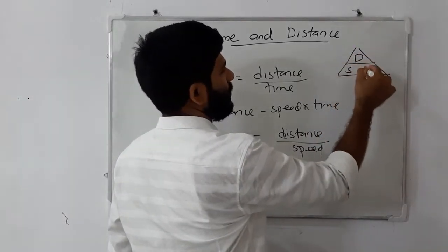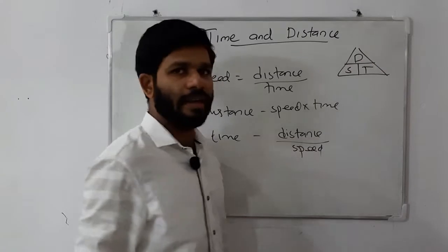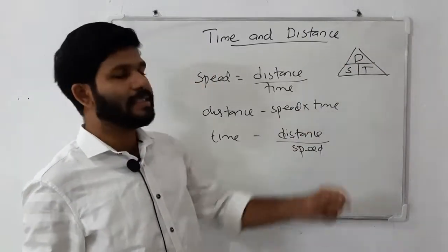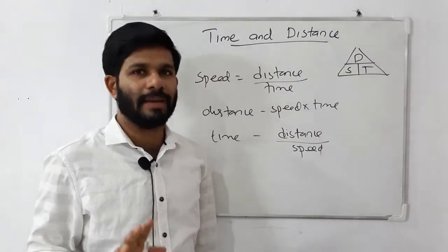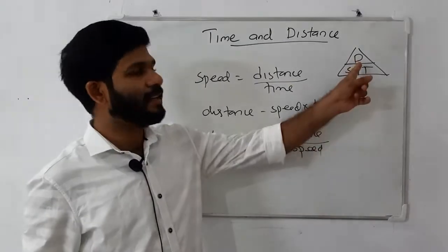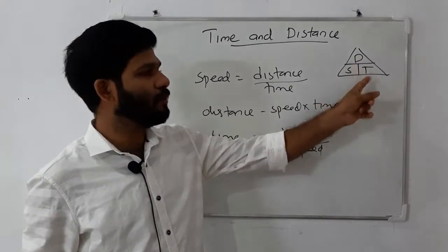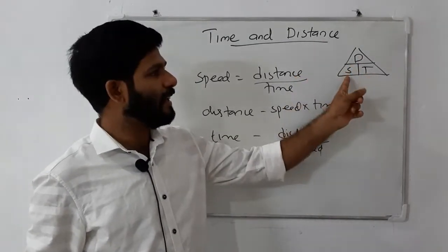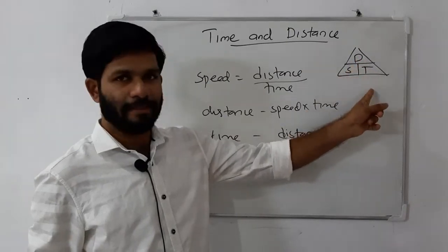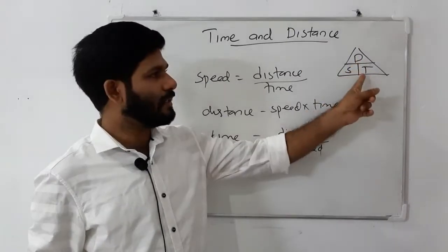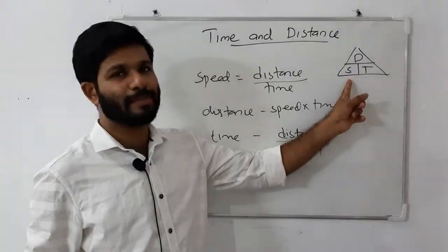D, S, T — D is distance, S is speed, and T is time. Distance is equal to Speed multiplied by Time. Speed is equal to Distance divided by Time. Time is equal to Distance divided by Speed.